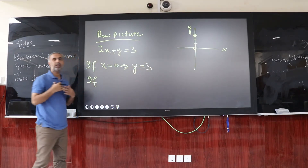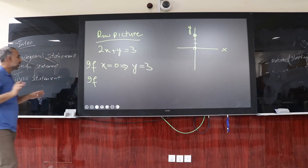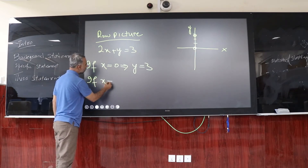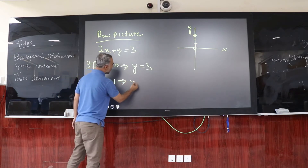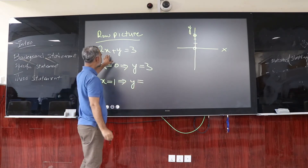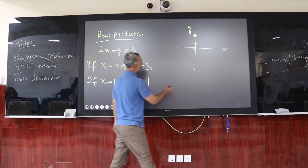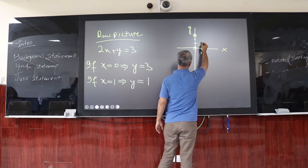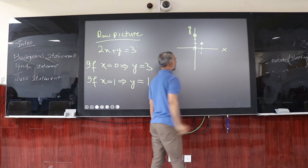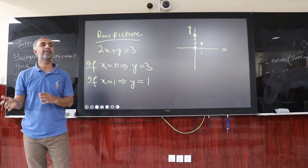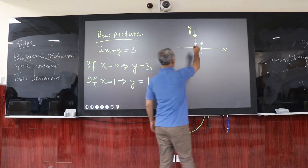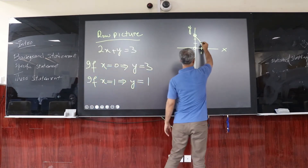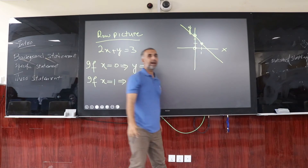We can consider any value on a random basis, but we go in ascending order. For x equal to 1, the value of y becomes 1, giving us the point (1, 1). You may consider 2, 3, or more points, but if we connect these two points and extend the line on both sides, we get this equation of a line.